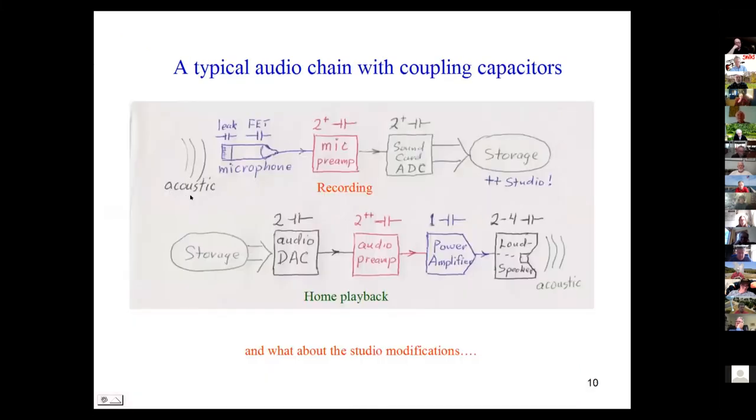Here's a typical audio chain. The microphone has a high-pass acoustic phase shift of one equivalent capacitor. The coupling to the FET is another one. Then there's DC offset at the output of the microphone preamp connected to the second preamp. There are two of them in there, probably. The sound card will have about two. Then you can store it digitally - heaven knows what the studio is going to do.